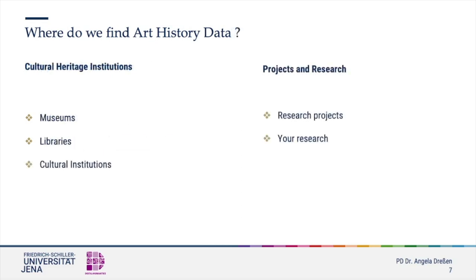Cultural heritage institutions are among the big players of art history data. Museums and libraries offer a lot of data in a variety of ways — either in their online catalogue, through query methods towards the endpoint of their catalogue, or as a dataset on GitHub. These institutions move forward increasingly in the spirit of sharing data and images following an open access policy, which in the end also adds to the volume of open educational resources.